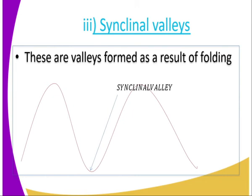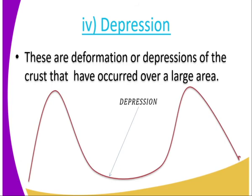Next we have syncline valleys — these are valleys formed as a result of folding, found where the synclines occur. Then we have depressions — these are deformations of the crust that have occurred over a large area. They are similar to valleys but depressions cover a very large area, extending across an extensive region of fold mountains.